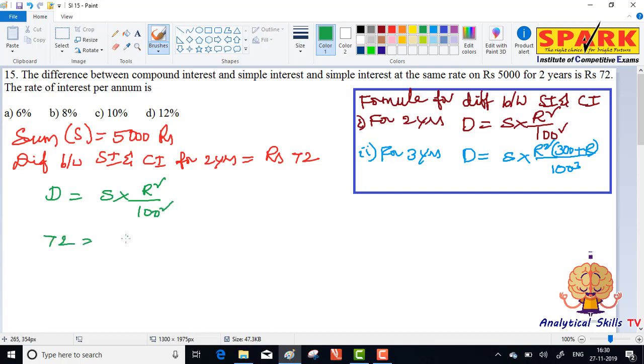So the difference is 72, which equals sum 5000 into... we need to find the rate of interest. Rate of interest r equal to, how much we need to find.